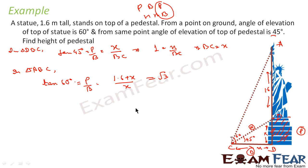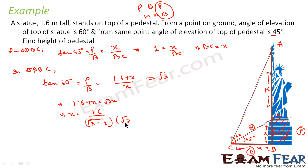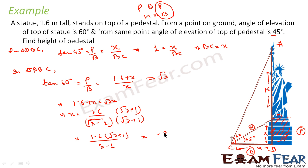So we can solve now. We get 1.6 + X = √3 · X, which gives X = 1.6 / (√3 − 1). Rationalizing by multiplying numerator and denominator by (√3 + 1), we get 1.6(√3 + 1) / (3 − 1) = 1.6(√3 + 1) / 2 = 0.8(√3 + 1). This is the height of the pedestal.